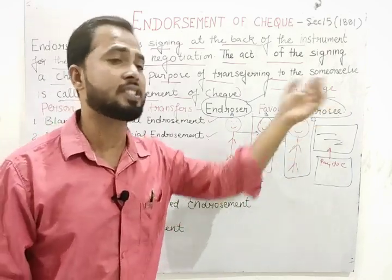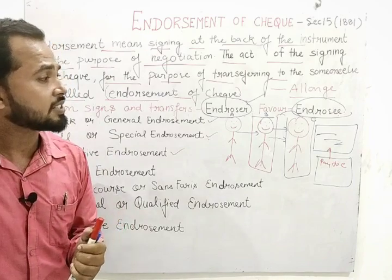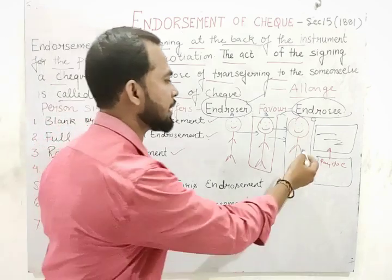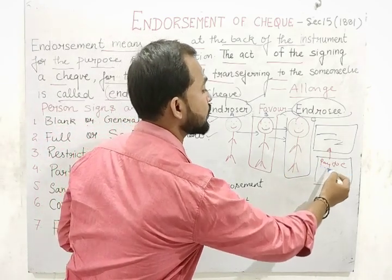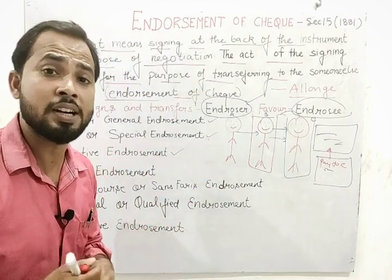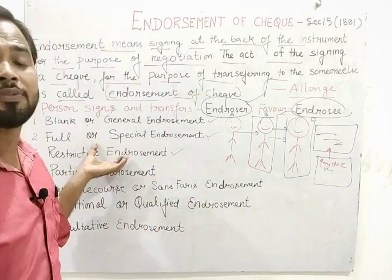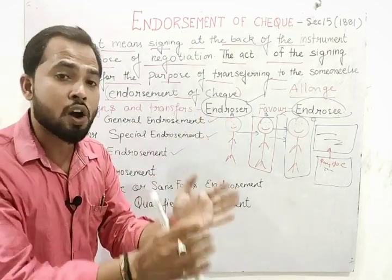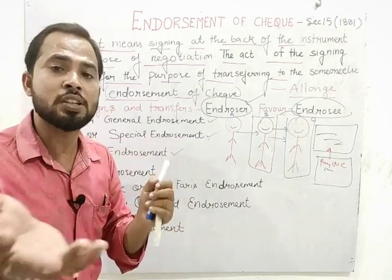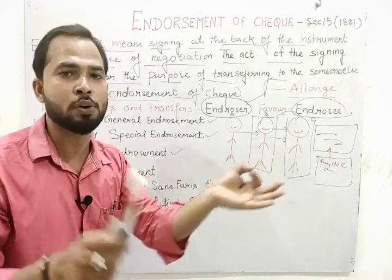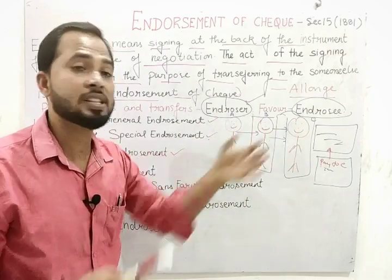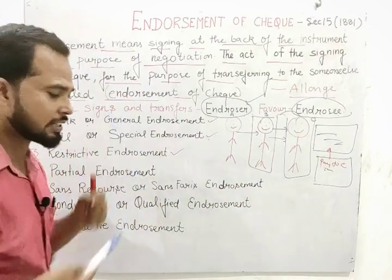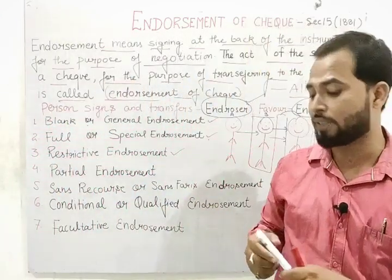The third type is restrictive endorsement. Suppose Mr. B wants to stop the further transfer of the check after Mr. C — meaning he wants that Mr. C should not transfer the check to anyone else, to avoid fraud. So the endorser writes 'only transfer to Mr. C.' When the word 'only' is written, Mr. C has no authority to transfer this check to the next party. Such type is known as restrictive endorsement.